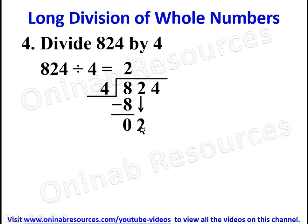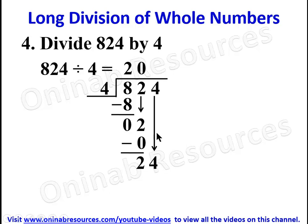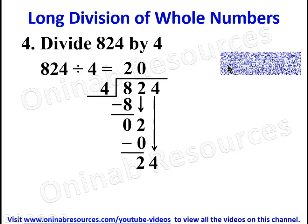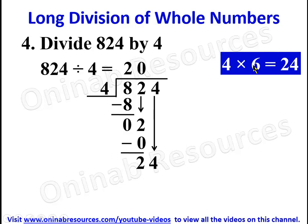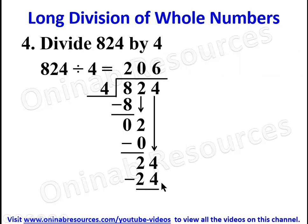Two divided by four — how many fours can we get in two? We can't get any, so it is zero. Zero times four gives zero, and two minus zero gives two. We bring down the four as the next digit. We know four times six gives twenty-four, so twenty-four divided by four gives six. Four times six gives twenty-four, and twenty-four minus twenty-four gives zero.